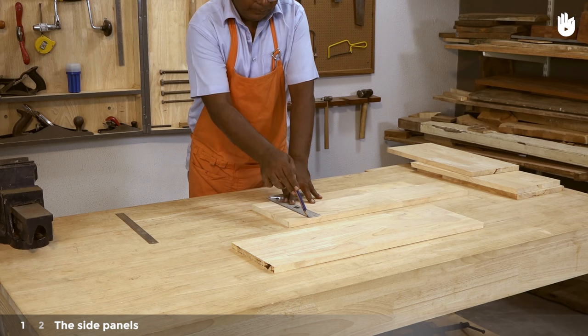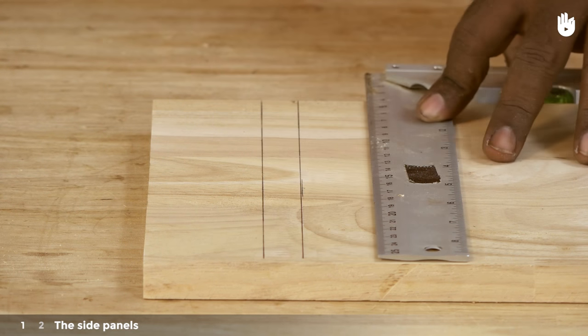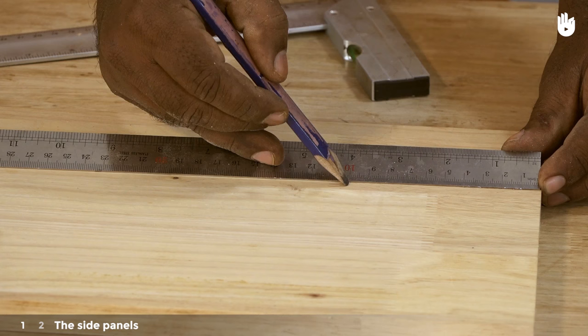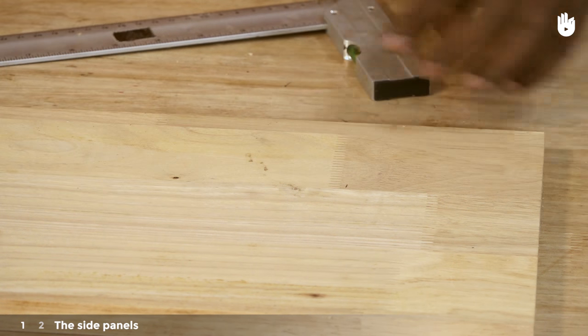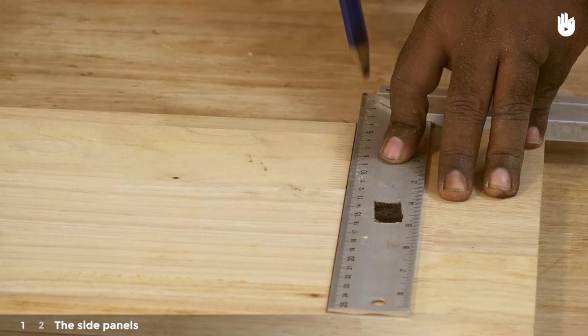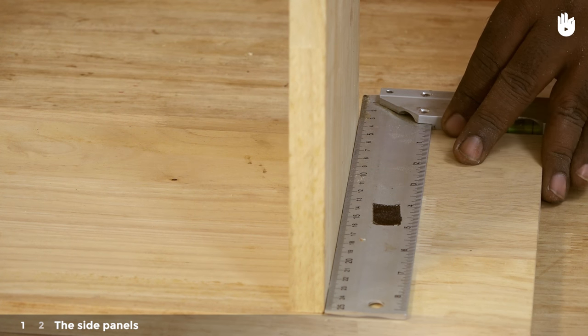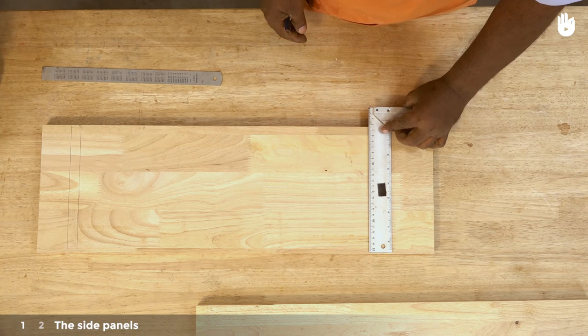Complete the lines with a trisquare. Next, measure and mark the position of the top shelf 10 cm from the opposite edge. Place the shelf alongside the line. Mark its width and draw a line along the mark.